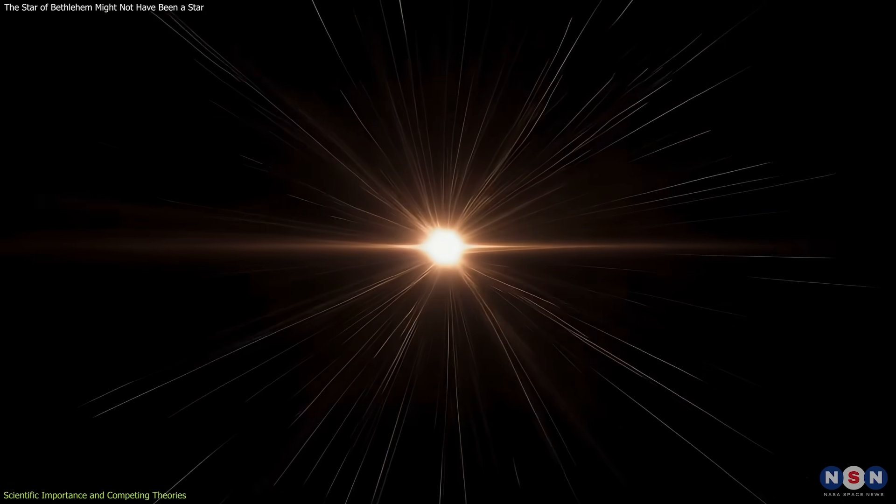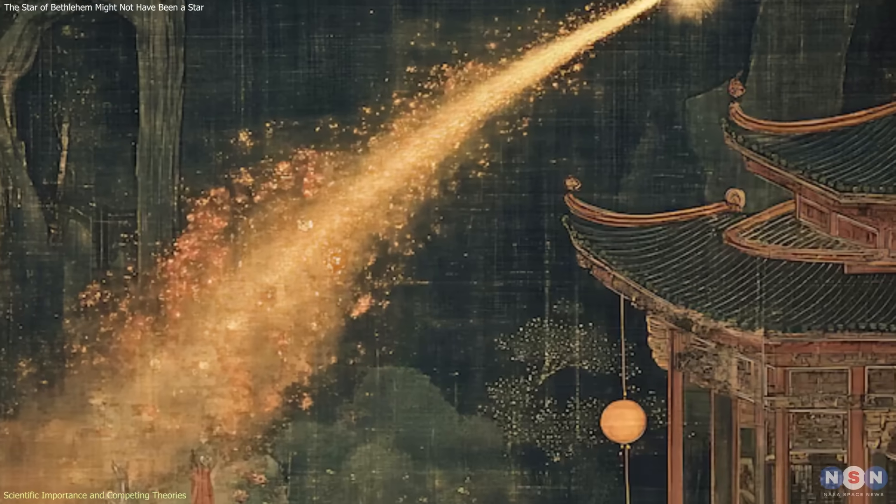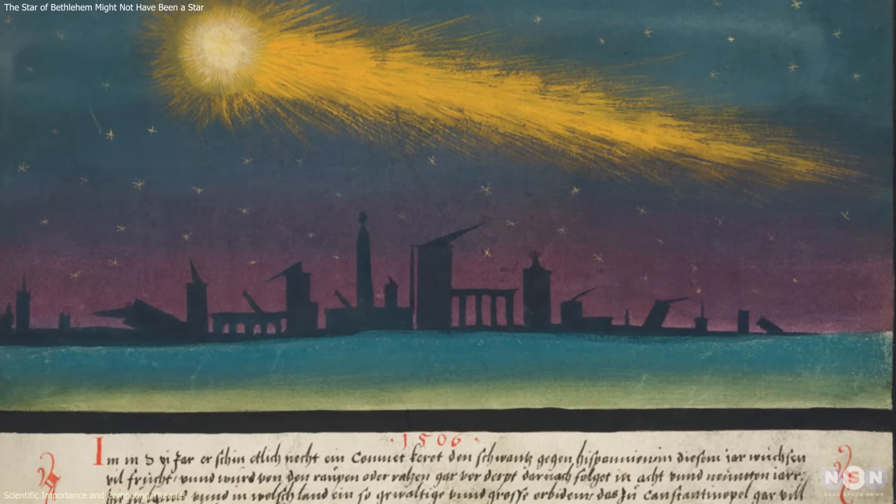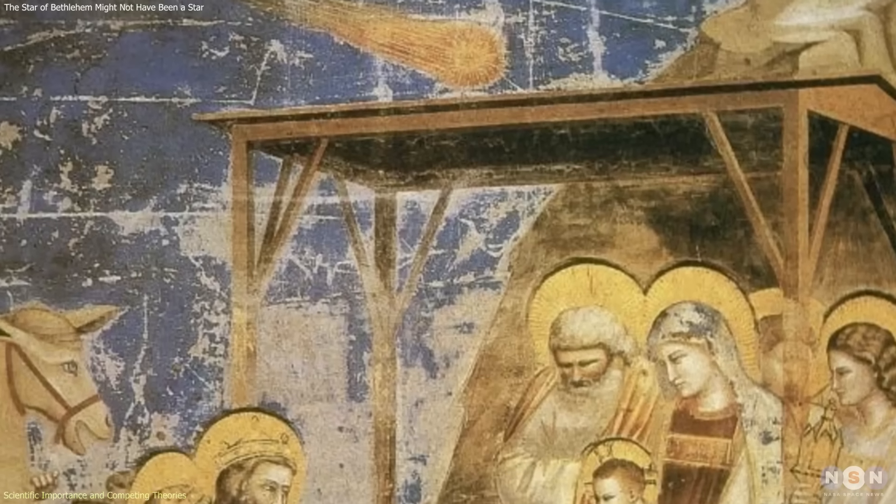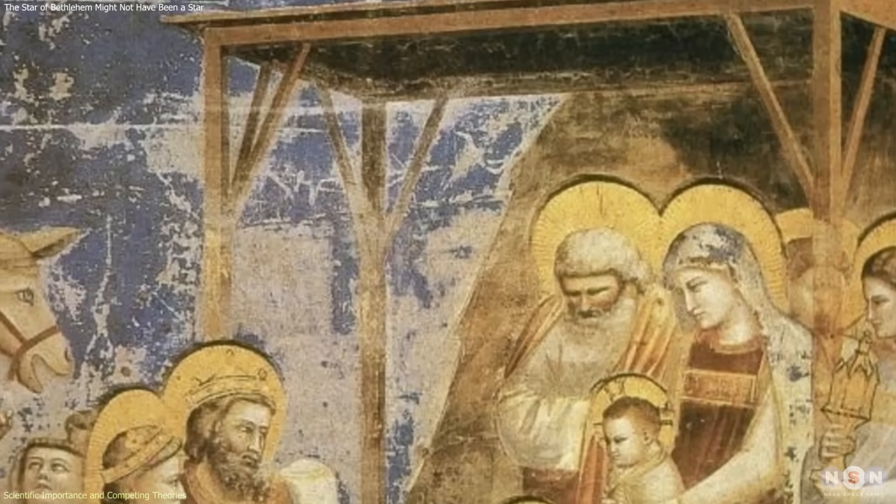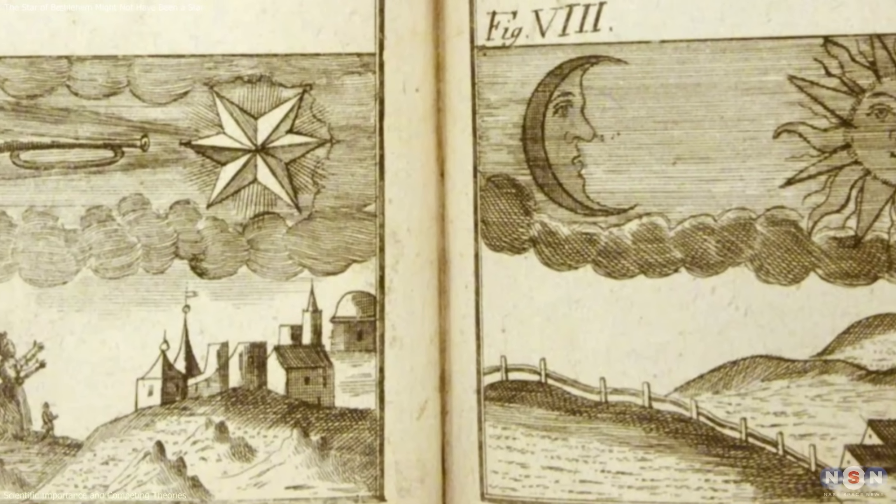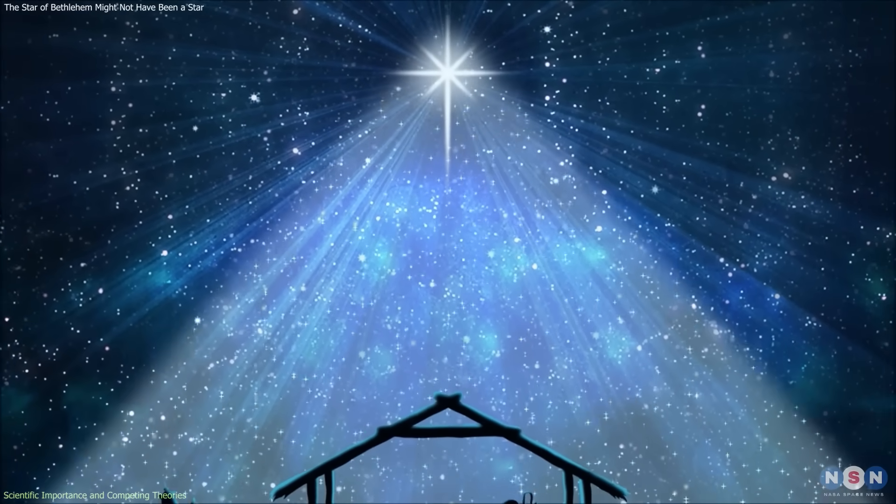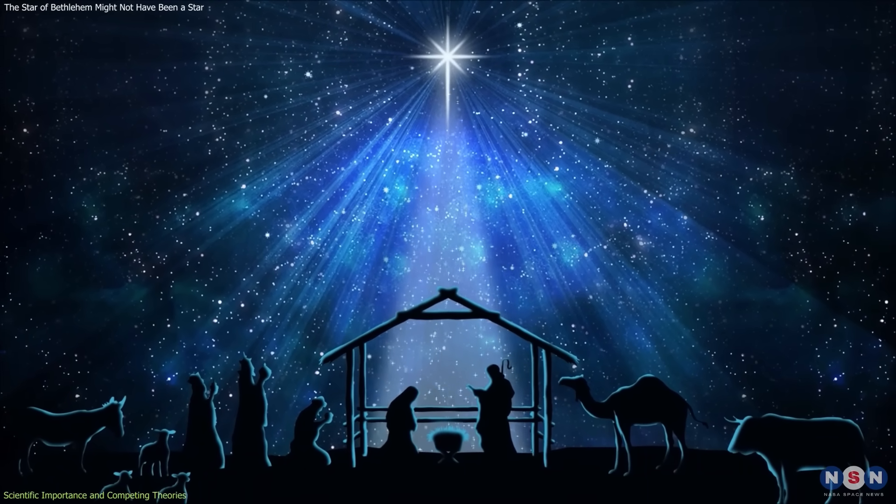Beyond physical evidence, the idea also reframes how ancient cultures interpreted the sky. In the ancient world, comets were not classified as scientific objects, but as signs of major change. They were often associated with the rise or fall of rulers, political upheaval, or the beginning of new eras. From that perspective, a prominent comet appearing near the time of Jesus' birth would have carried symbolic weight regardless of its physical explanation.